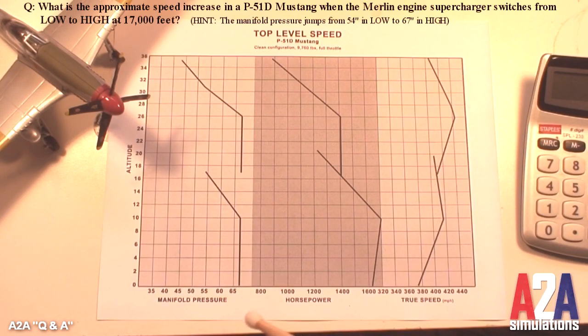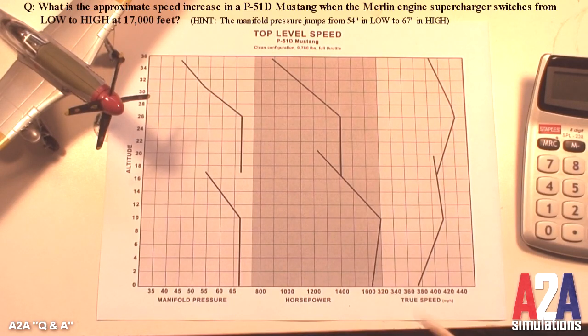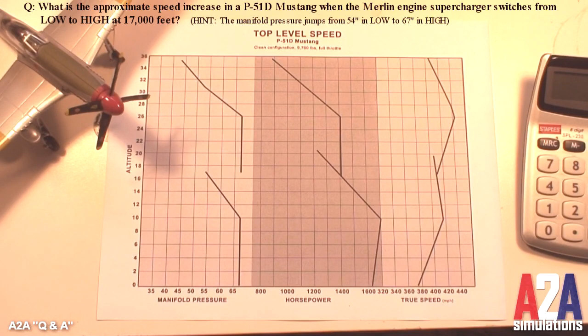Now if you notice at sea level, at full throttle, we're producing 67 inches of manifold pressure, over 1600 horsepower and about 370 plus miles per hour.